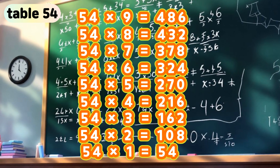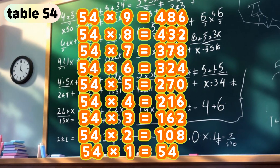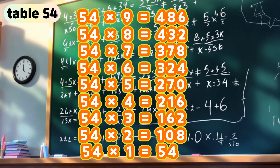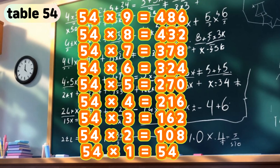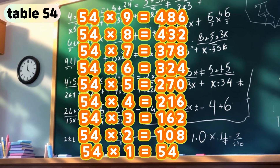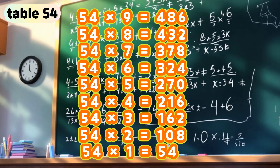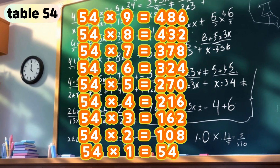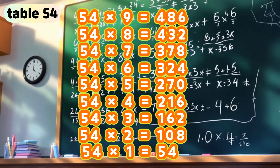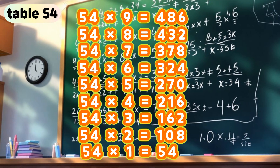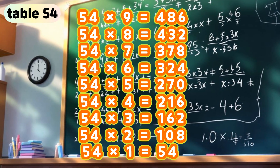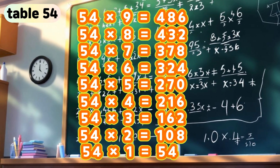Table 54. 54 times 9 is 486. 54 times 8 is 432. 54 times 7 is 378. 54 times 6 is 324. 54 times 5 is 270. 54 times 4 is 216.